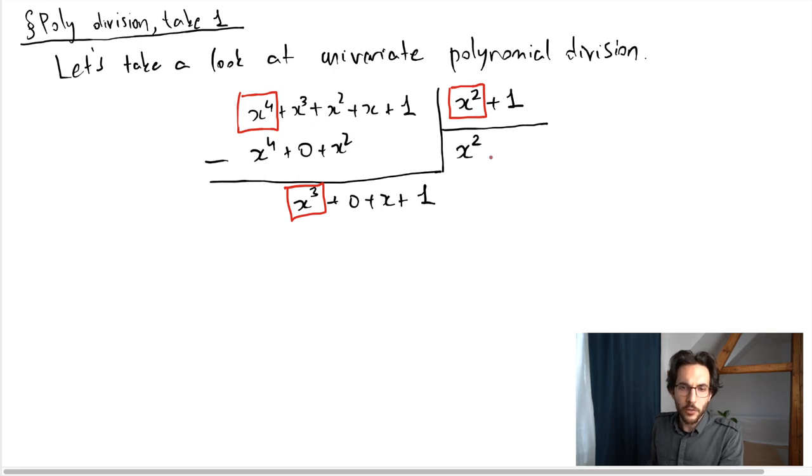x cubed divided by x squared is x, so that's what I'm going to add to my quotient here. Then I multiply x with x squared plus 1, and then I subtract the result once again, which gives me 1. At this point something new happens: the leading term is 1, and 1 is not divisible by x squared. Then we declare that this 1 is the remainder and we terminate the algorithm.